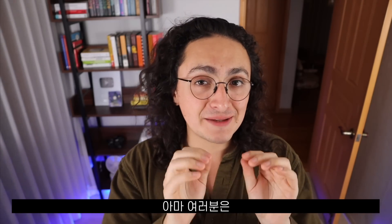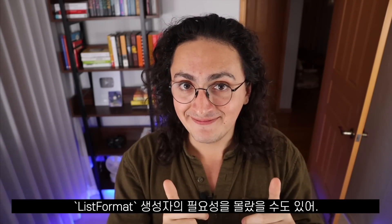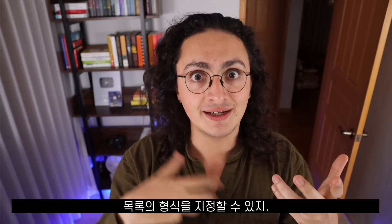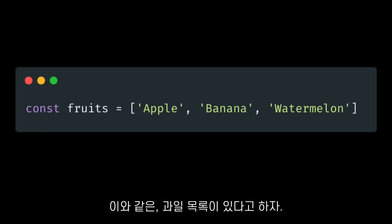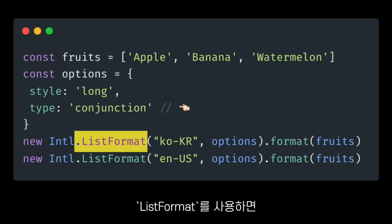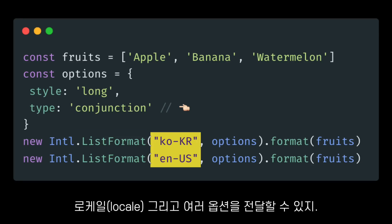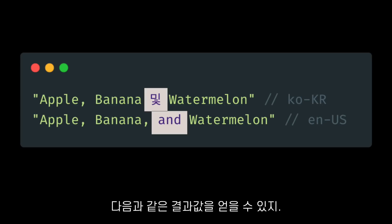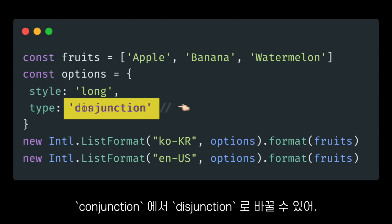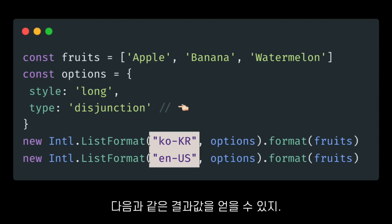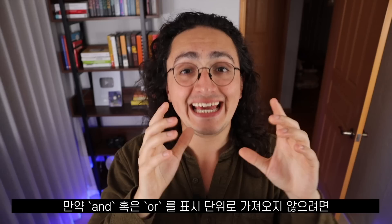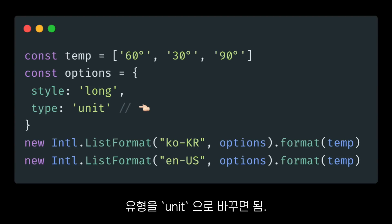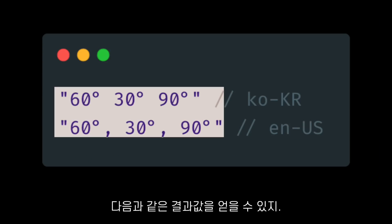A constructor that maybe you did not know you needed until today is the ListFormat constructor. ListFormat allows you to format lists. If we have a list of fruits, we can use ListFormat like the other constructors, passing a locale and some options, and that will give us an output like this. We can change the type from conjunction to disjunction and get something like this. If you don't want 'and' or 'or' — to display units, for example — you can change the type to unit, getting something like this.